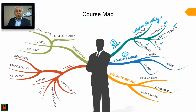Moving to section 4, which is on quality awards, we will learn about three awards: the Deming Award, the EFQM (European Foundation for Quality Management) Award, and the MBNQA (Malcolm Baldrige National Quality Award).